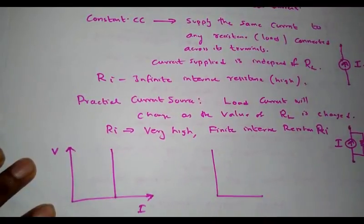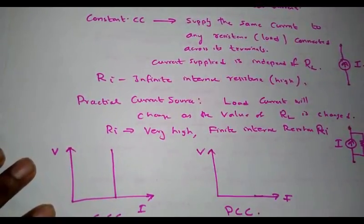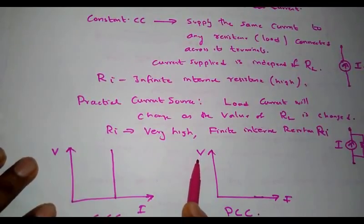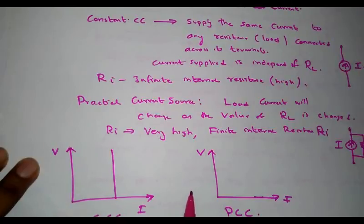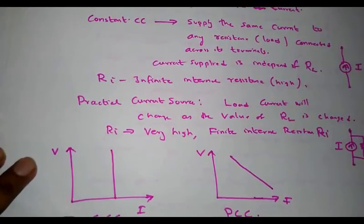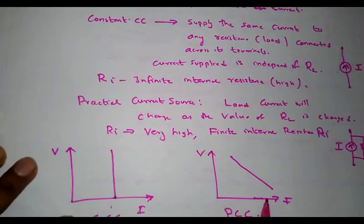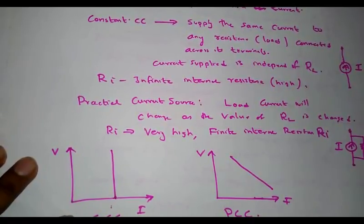For a practical current source, the VI characteristics can be represented with V on the y-axis and I on the x-axis. As the terminal voltage increases, the current drawn changes with the value of resistance. For a constant current source, the current drawn is always constant, whereas for a practical current source, the current decreases as voltage increases and increases as voltage decreases.